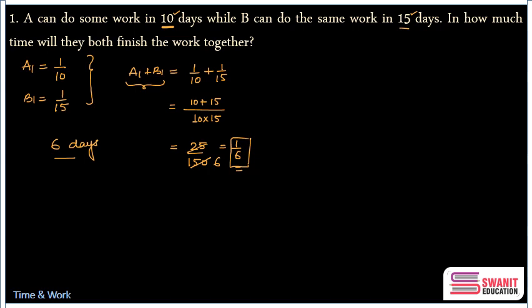Now let me explain another method to solve the same question. And this method is going to be very useful because every question based on time and work will be attempted by this particular method. Let us see what the method is. Because A can do the work in 10 days and B can do it in 15 days, I will assume total work as any random unit. So for example, I assume 30 units. As I said, you can assume any random value. I have assumed 30, you can assume 60, 90, 120, whatever it can be. So my assumption of total work is 30 units.